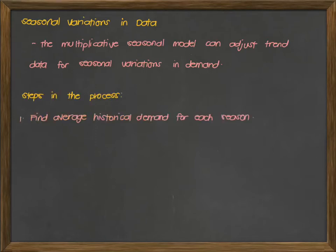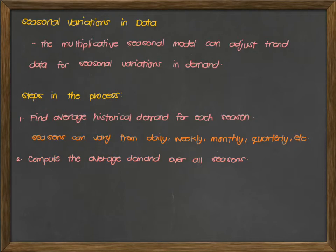We have the following steps in the process. First is to find the average historical demand for each season. Seasons can vary from daily, weekly, monthly, quarterly, or even annually. Second, compute the average demand over all seasons, or the overall average of the computed historical demand.